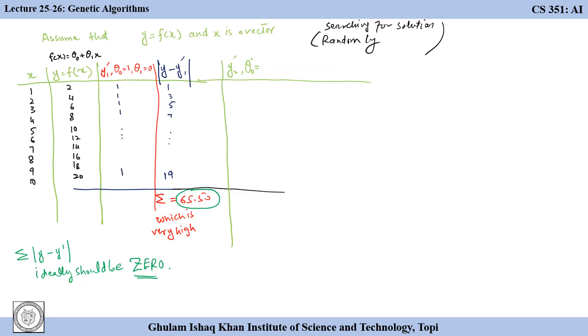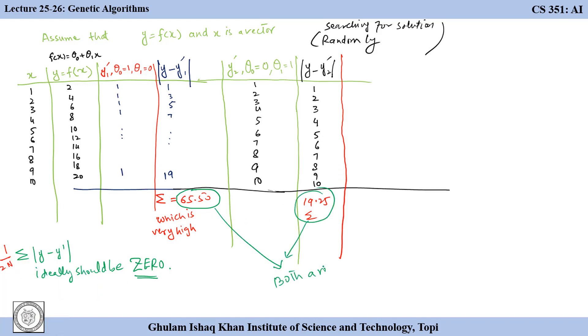If we further assume that theta 0 is 0 and theta 1 is 1 and we compute the difference between y prime and y and compute the sum we get 19.25, which is better than the previous guess but still far from 0. So we have two solutions right now and both are not good.